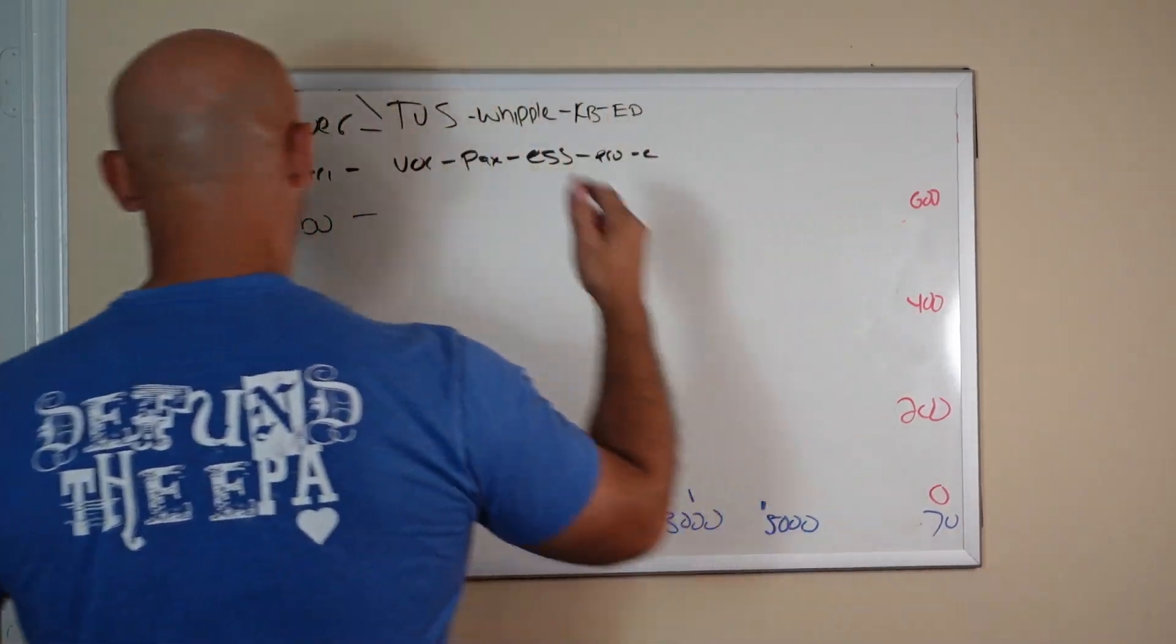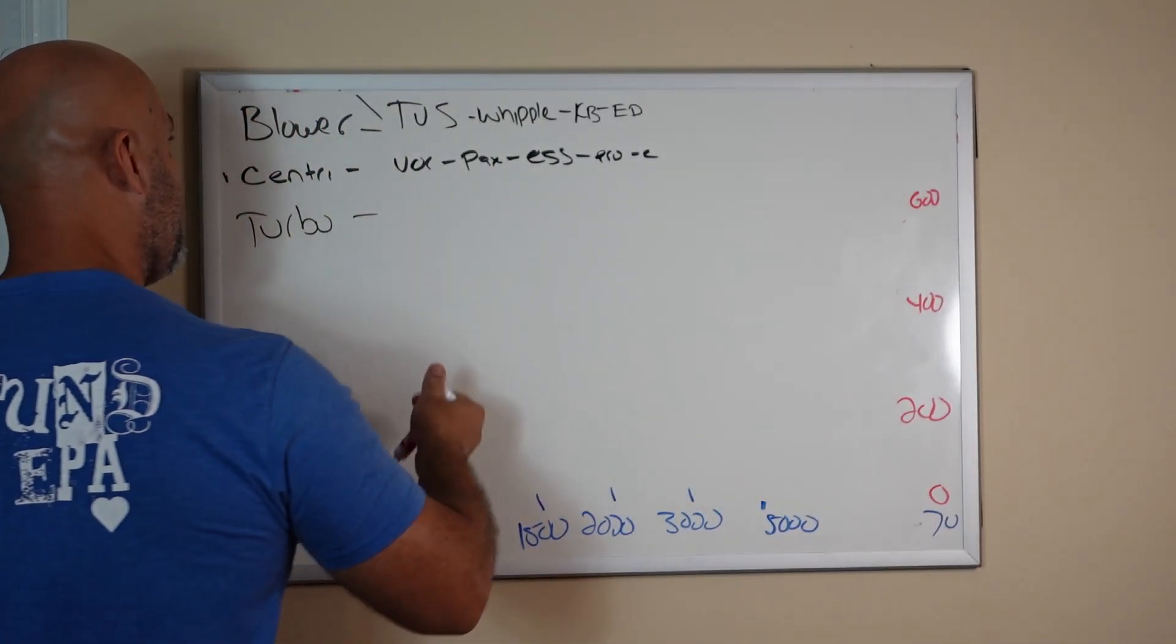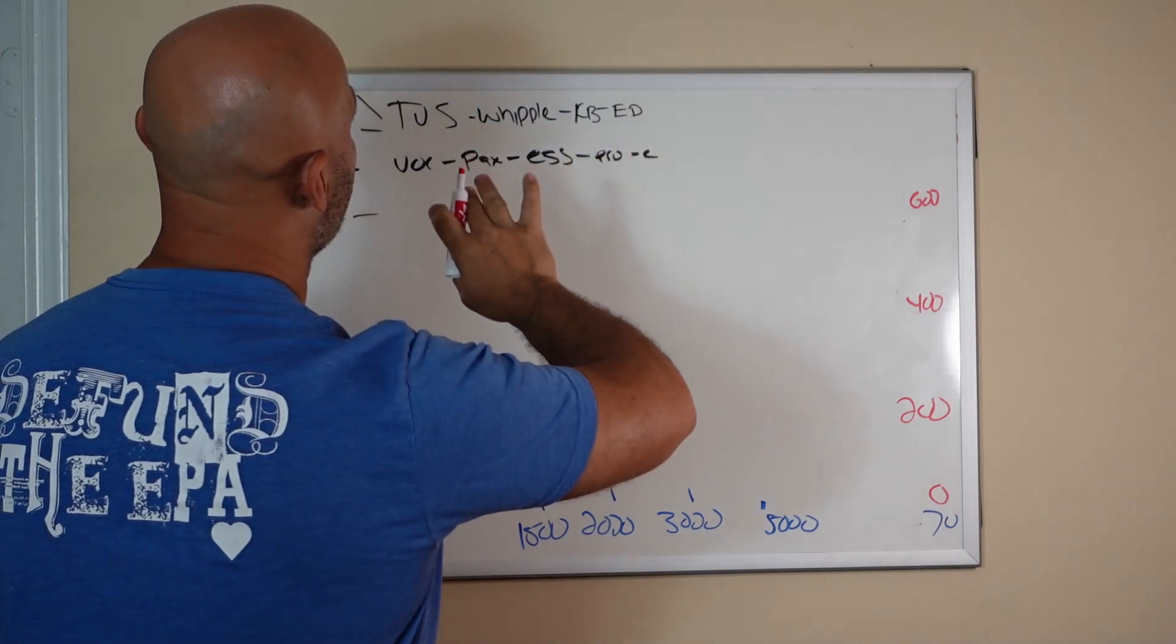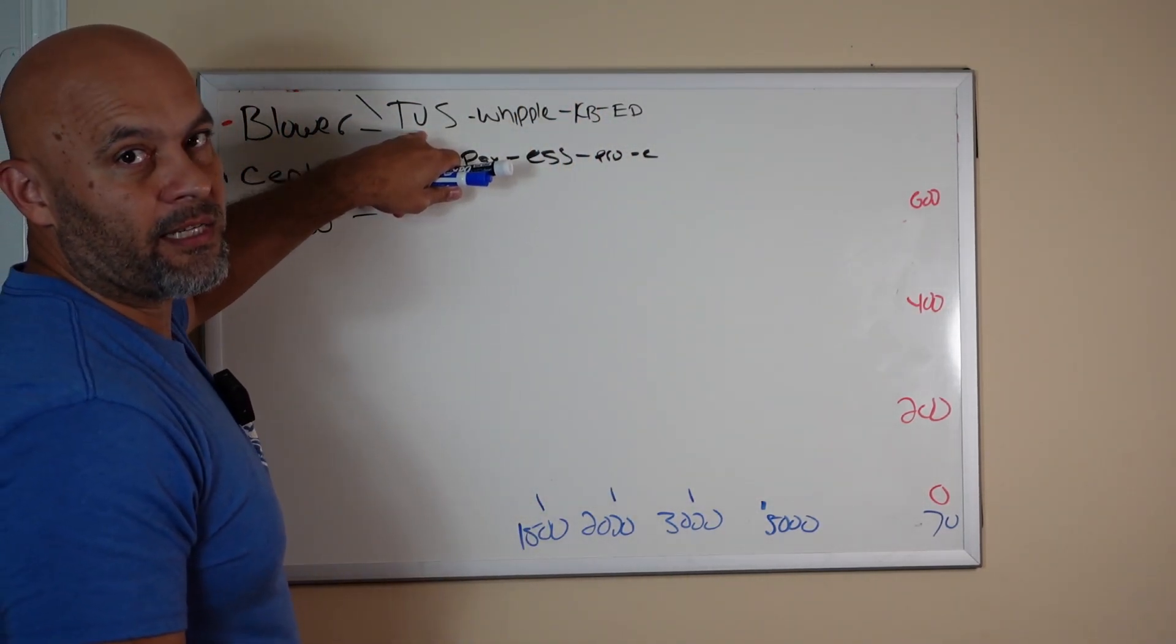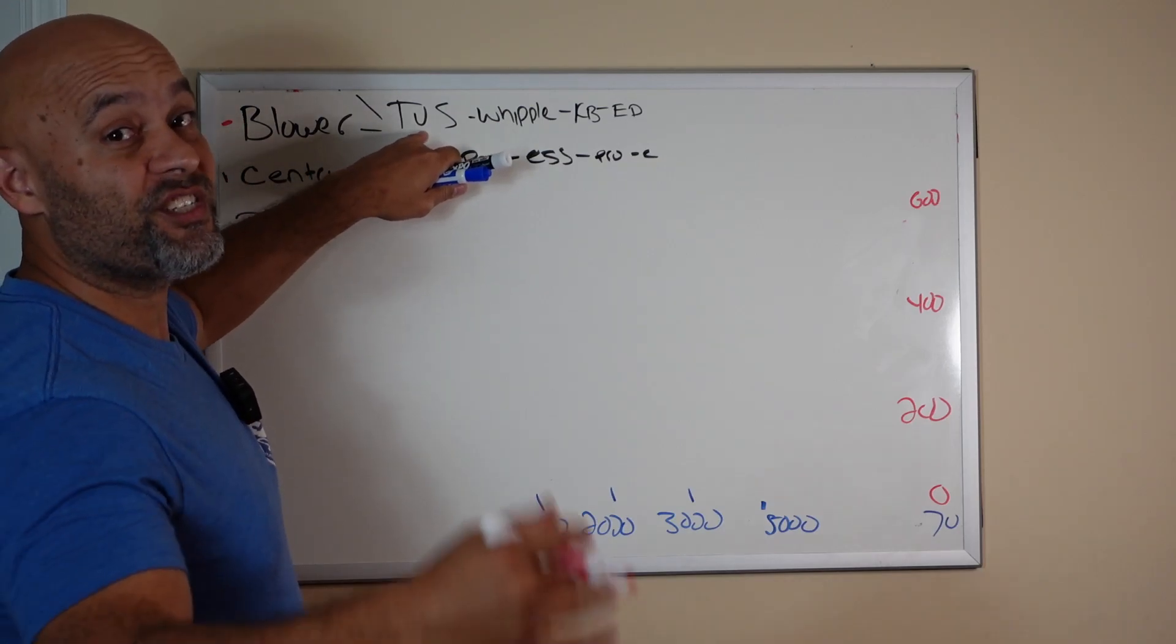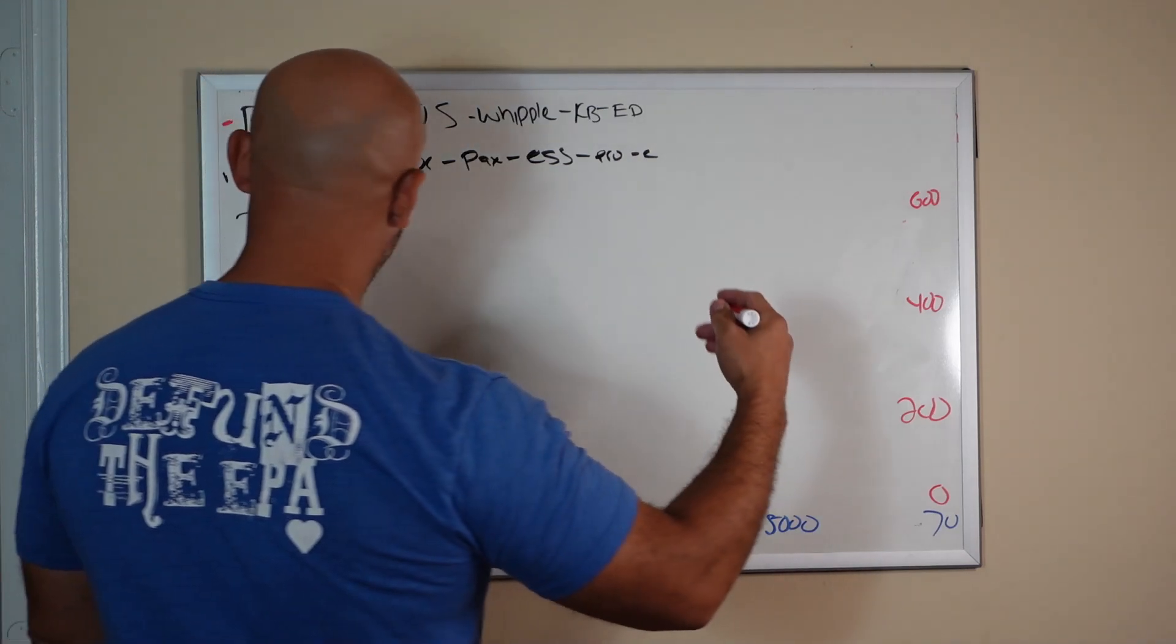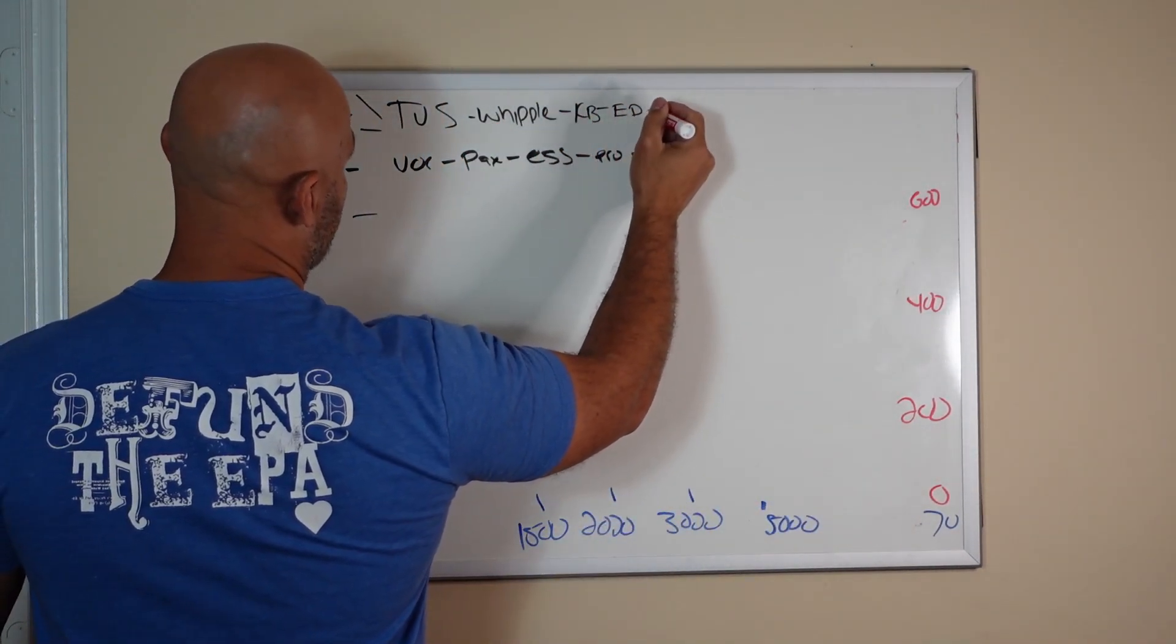Now let's concentrate on blower. We're going to look at TVS, Whipple, Kenny Bell, any of these guys. In my opinion, very similar power delivery. I favor the TVS because the TVS just hits harder. I don't care what anybody says, data proves it, everything proves it.